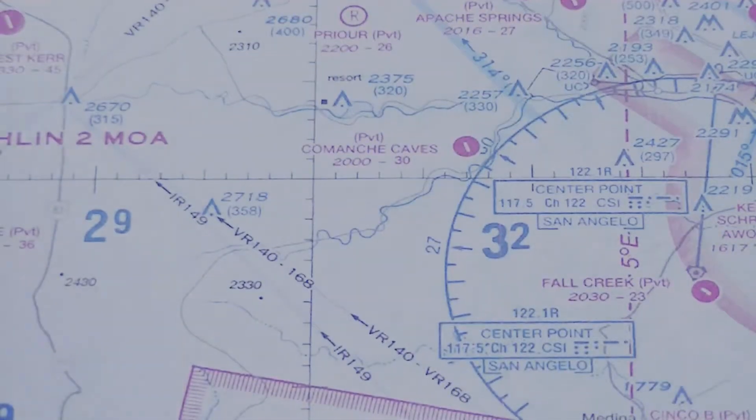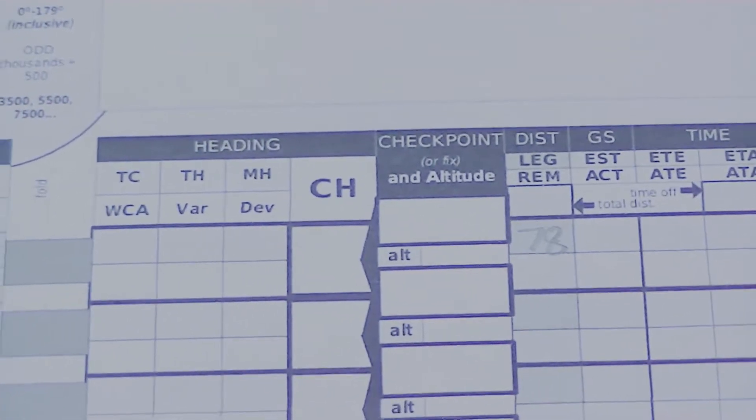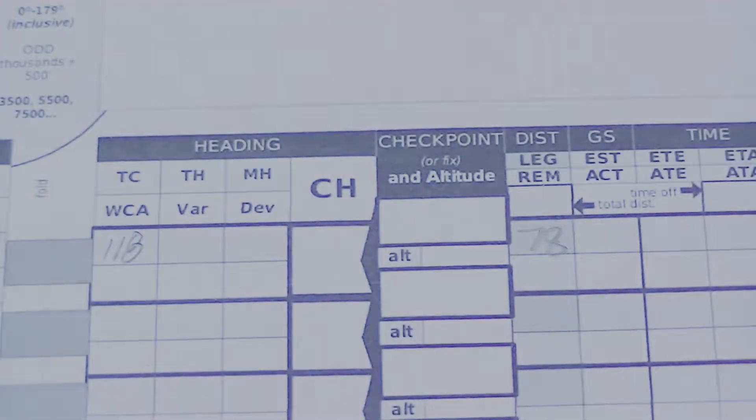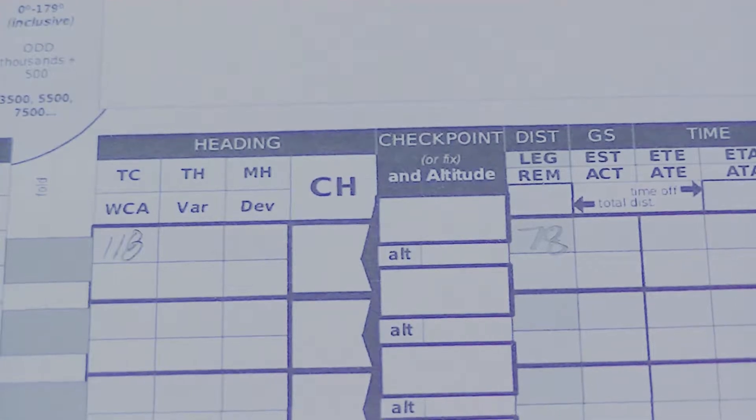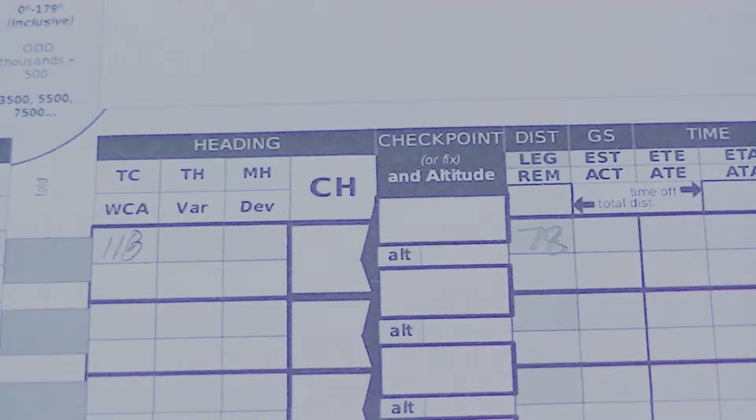So I can write that down, 118 degrees. And now I need to adjust for our wind correction angle. To do that we'll need a couple of things.